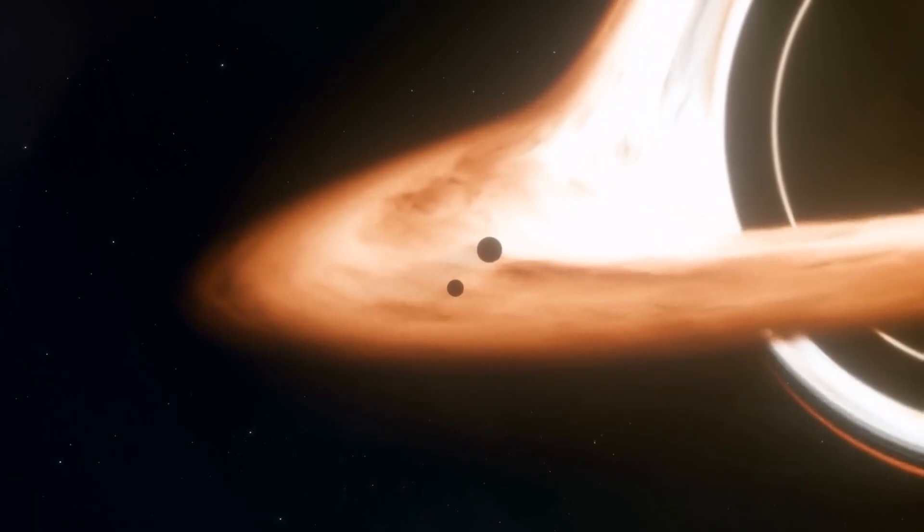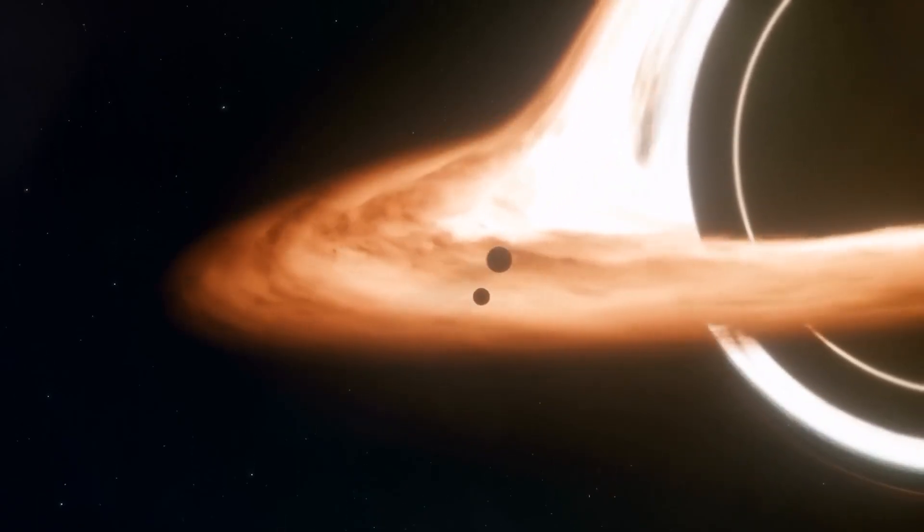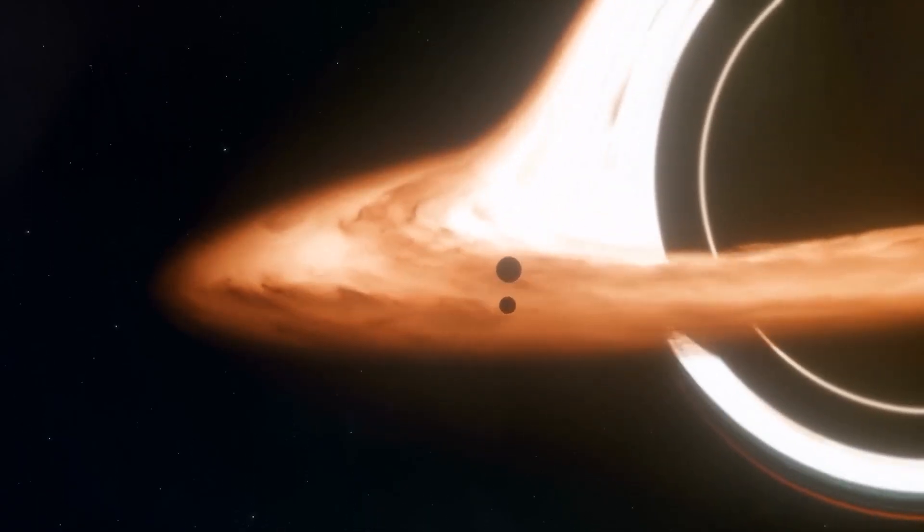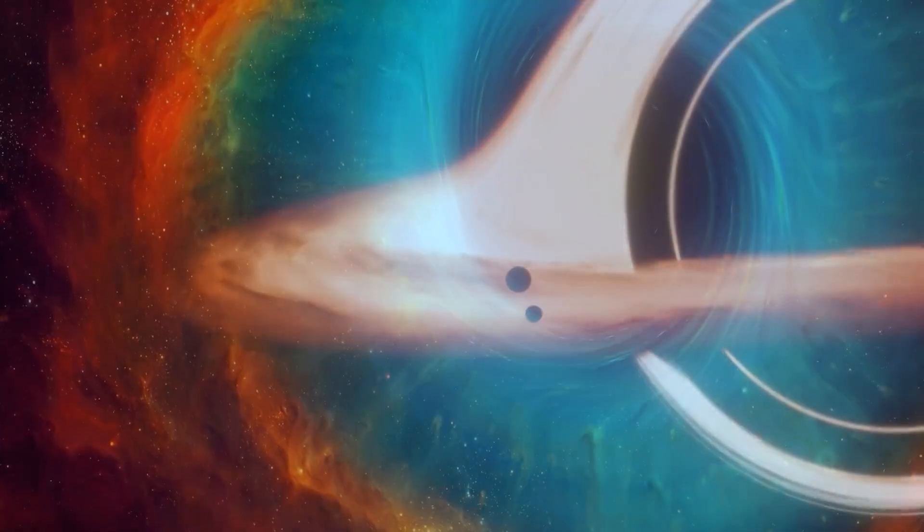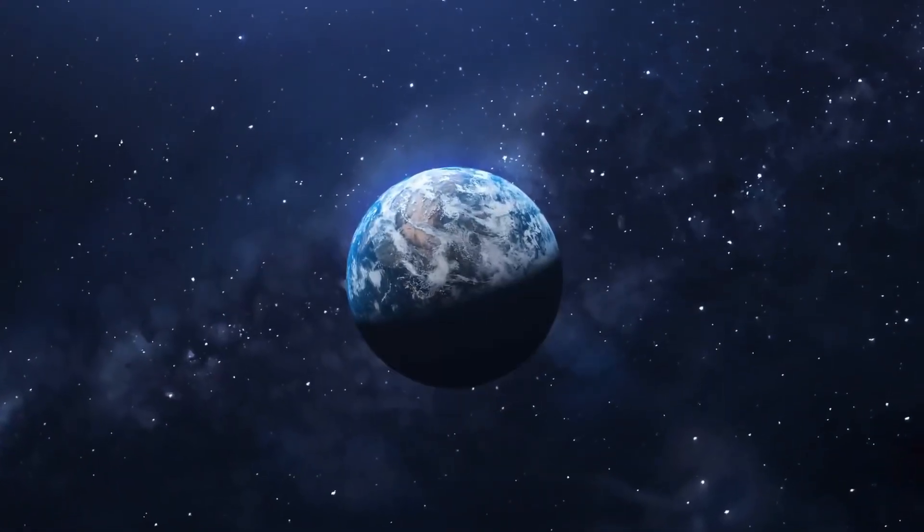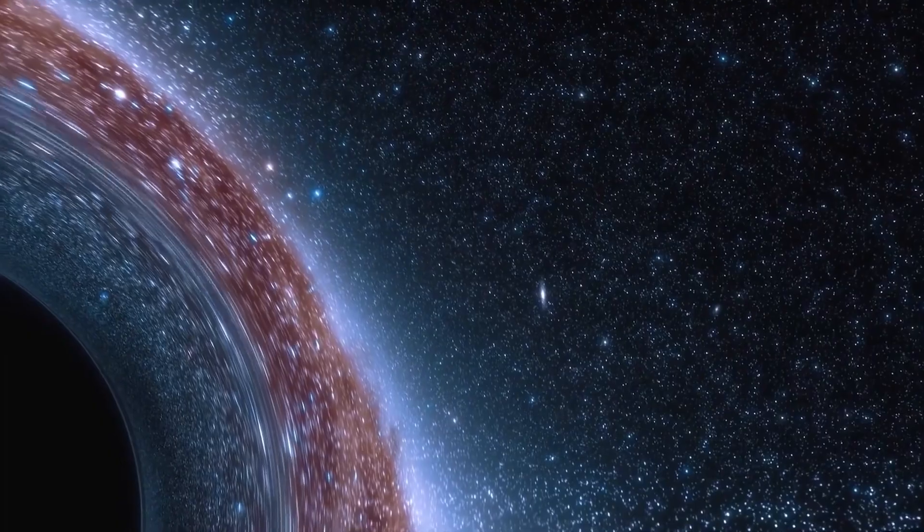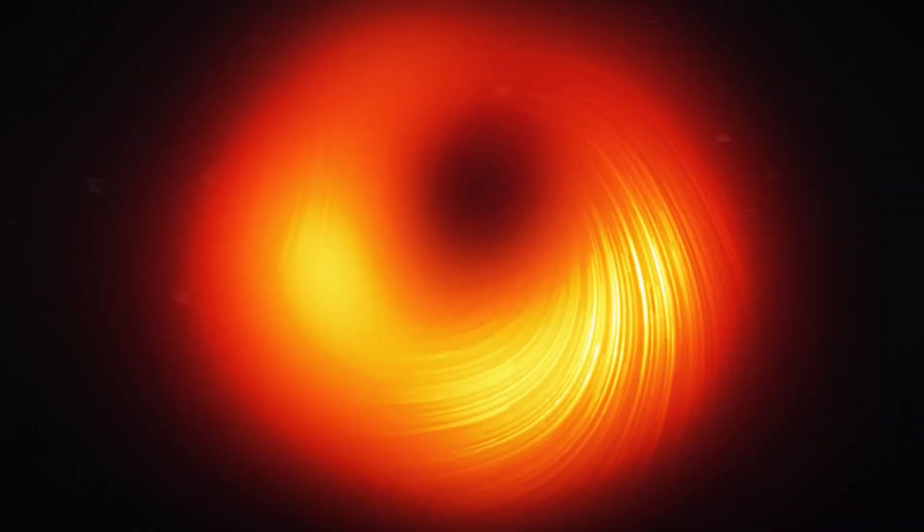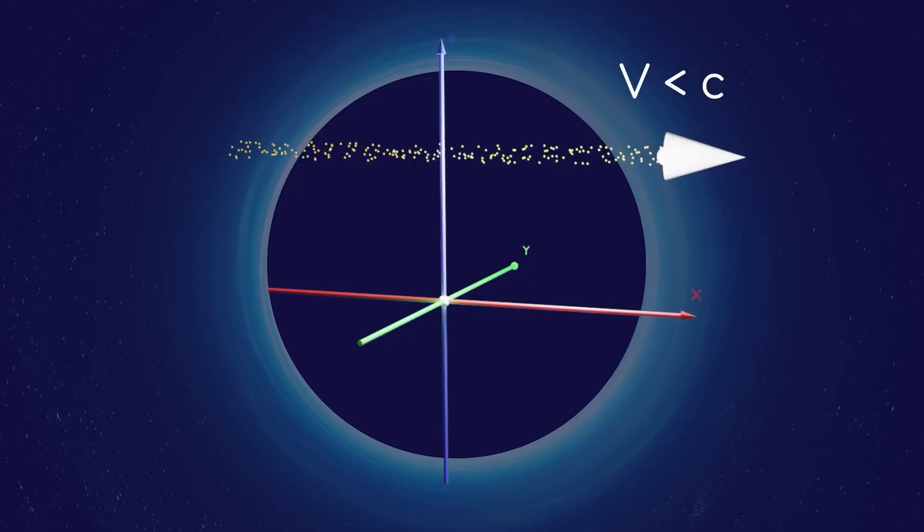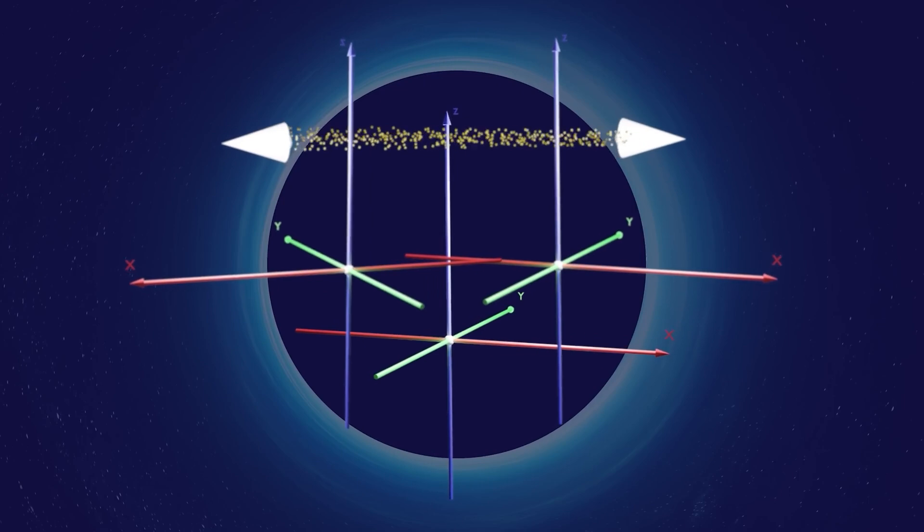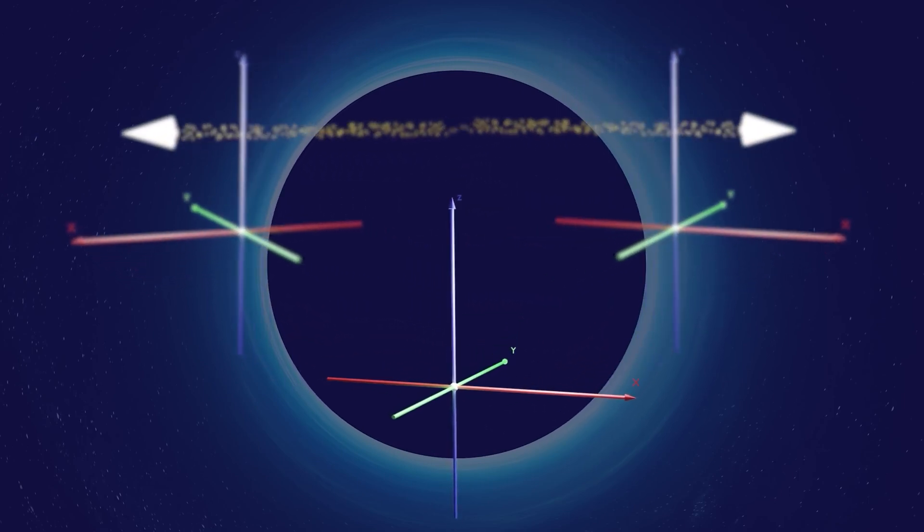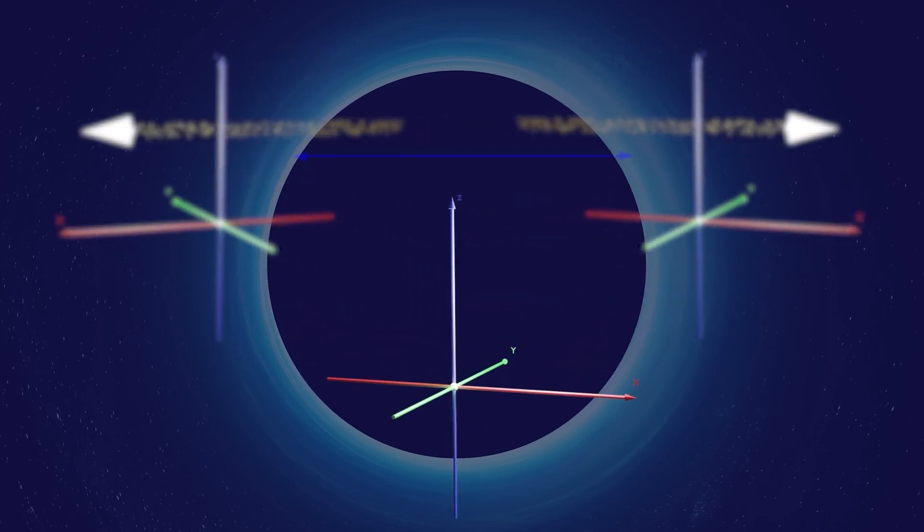Schwarzschild didn't call it a black hole, but what he wrote was the first modern description of its geometry. If we were to crush the Earth down to a sphere with a radius of just over 9 millimeters, the gravity at its surface would be so strong that light could not escape. It sounds simple, but its true meaning is terrifying. This isn't just a heavy object,